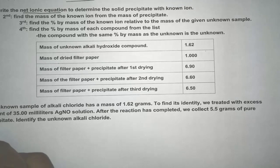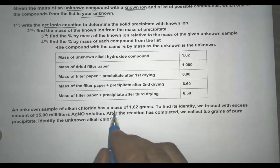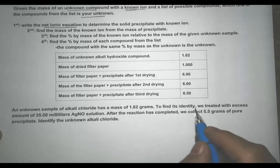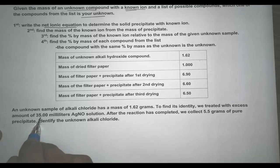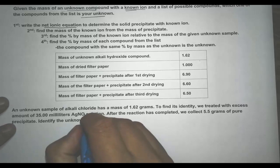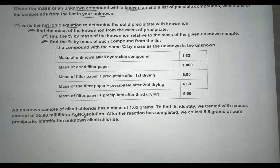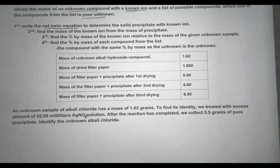Here I have an unknown sample of alkali chloride. It has a mass of 1.62 grams. To find its identity, we treat it with an excess amount of 35.20 mL of silver nitrate solution. After the reaction has completed, we collect 5.5 grams of precipitate. Identify the unknown alkali chloride.